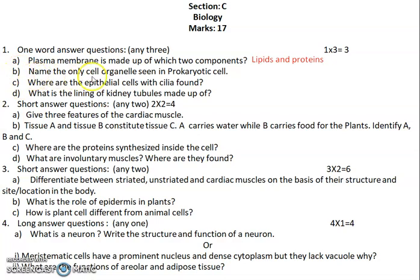Question 1b: name the only cell organelles seen in the prokaryotic cell. The right answer is ribosomes. Prokaryotic cells have only very small ribosomes as cell organelles. Both these questions were from the chapter 'The Fundamental Unit of Life'.